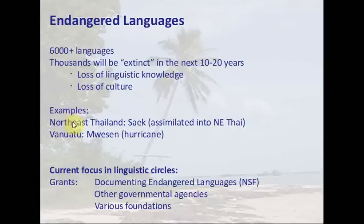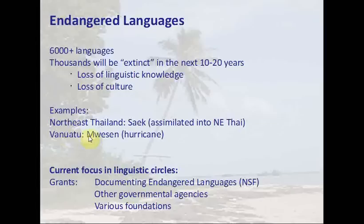For example, in my work back in the 90s I worked in the northeast part of Thailand with a language called Sak. Even at that time, there were only a few older people who spoke the language, and that community had been assimilated into northeast Thai. You could drive through and see village after village without anything distinctively Sak about it — which is a shame. Another example of an endangered language with a different cause was in Vanuatu, where there was a thriving language pretty much wiped out by a hurricane in the 70s, leaving only about 10 people who now speak it.